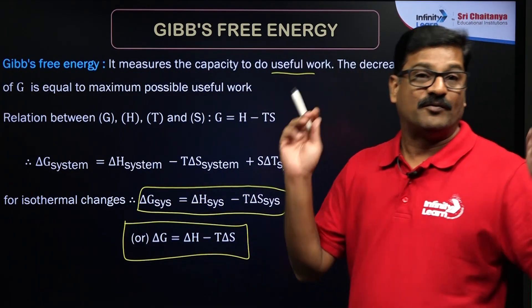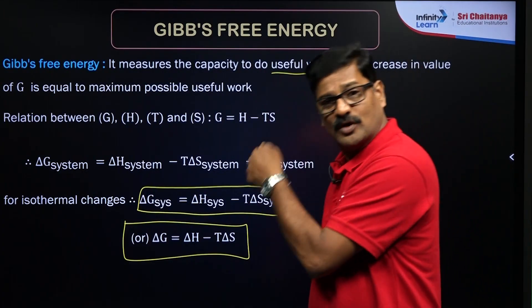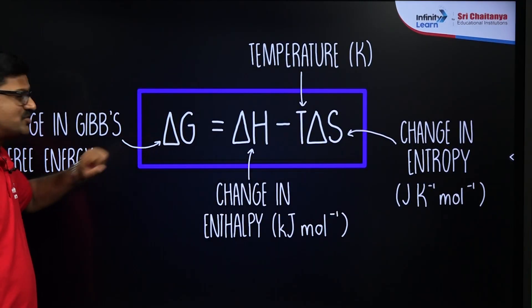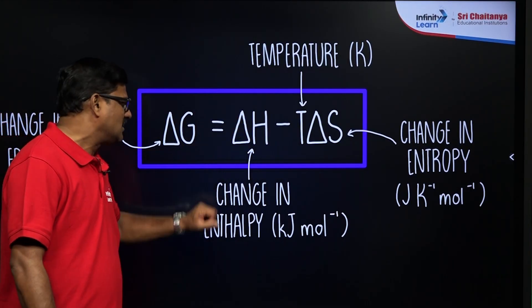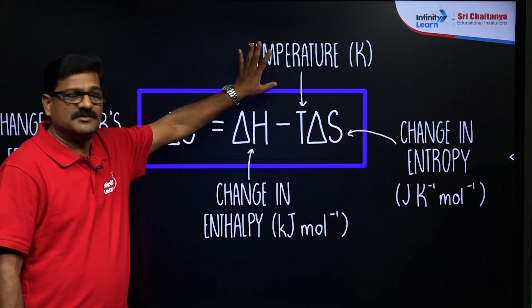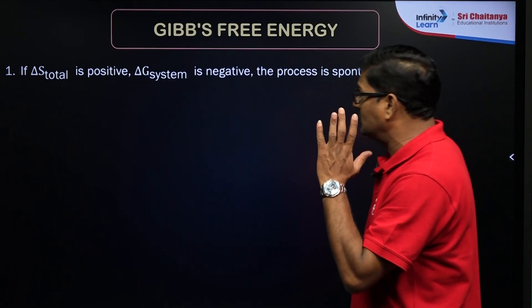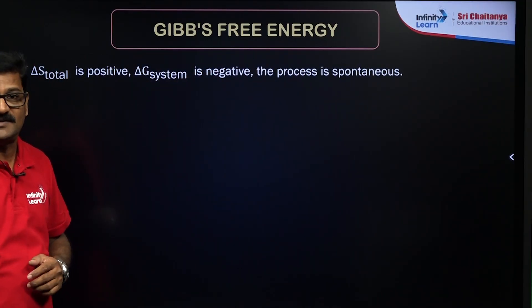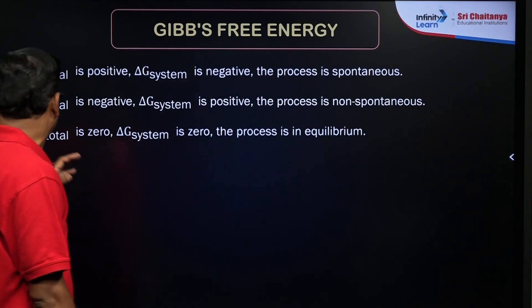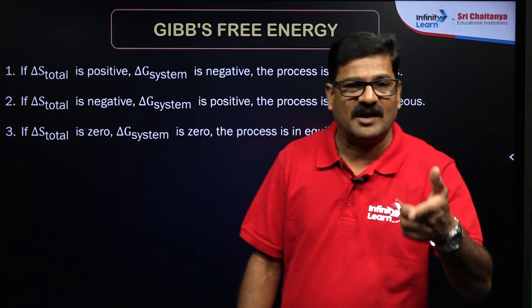From the Gibbs-Helmholtz equation: ΔG = ΔH − T·ΔS, where ΔH is the enthalpy change (negative for exothermic, positive for endothermic), T is the absolute temperature, and ΔS is the change in entropy. If ΔG is negative, the process is spontaneous; if ΔG is positive, the process is non-spontaneous; and if ΔG = 0, the system is at equilibrium.